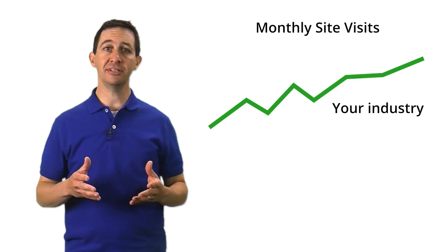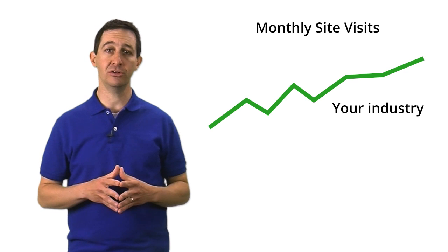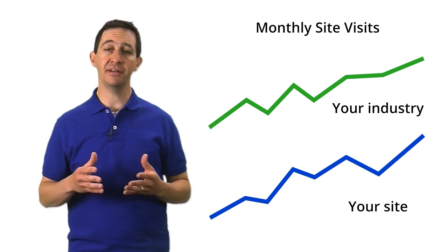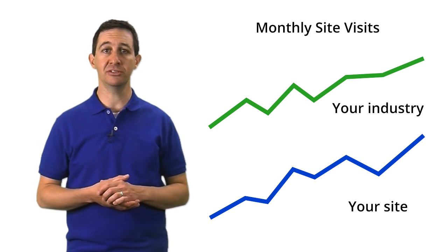Externally, context can come from industry benchmark data. This can help you understand how you perform relative to other businesses similar to yours. For example, external context makes it easy to see if an uptick in your business is due to a general growth trend for your sector or is just specific to your business.